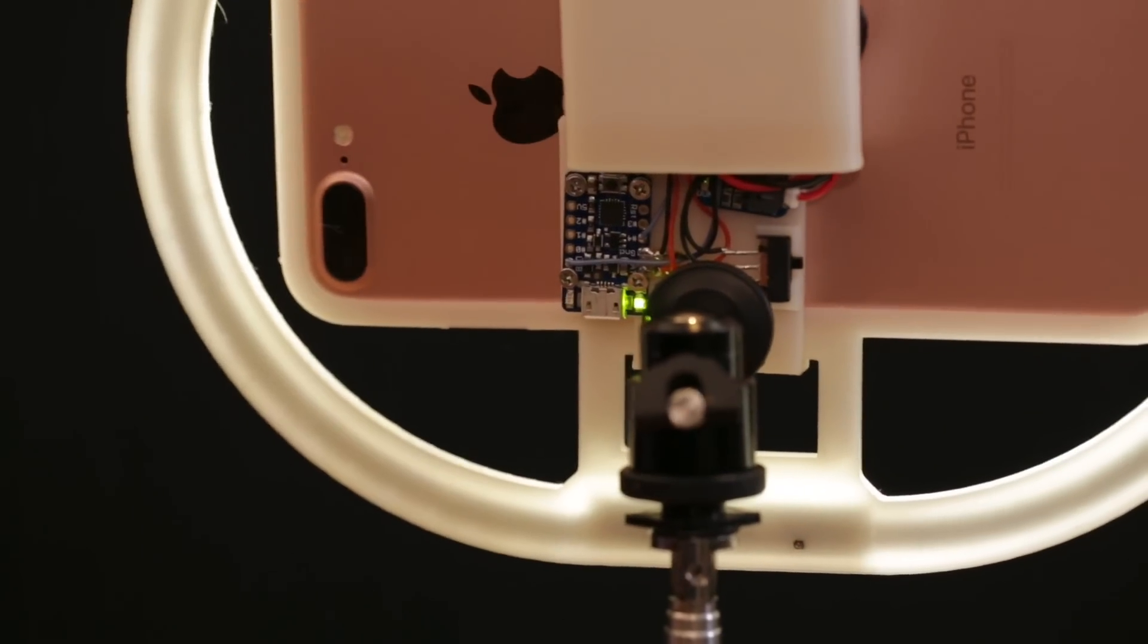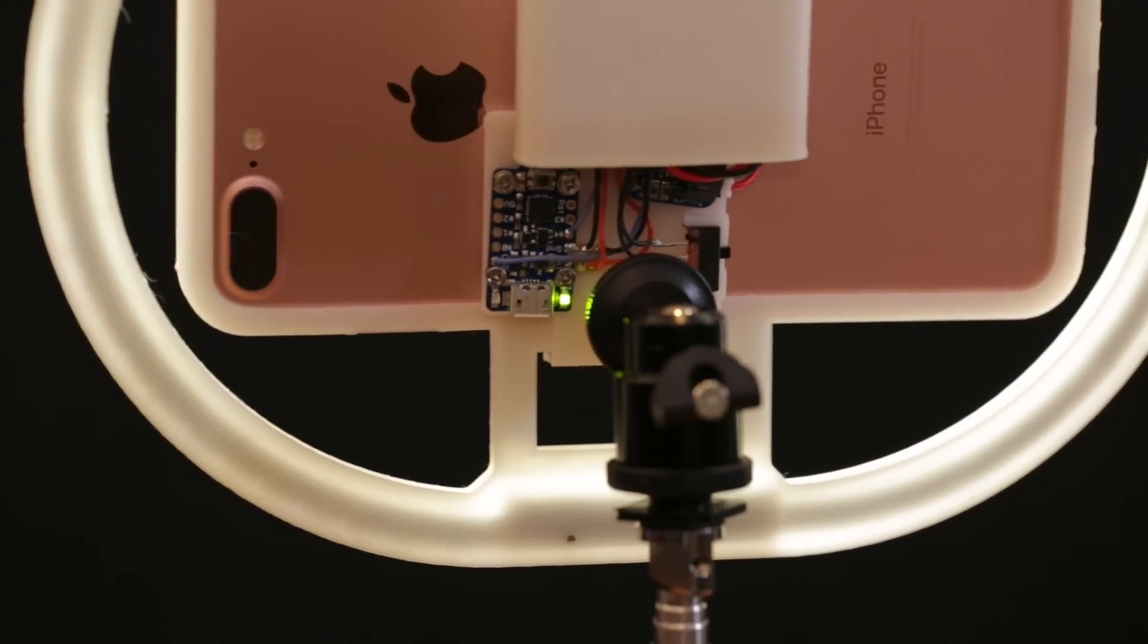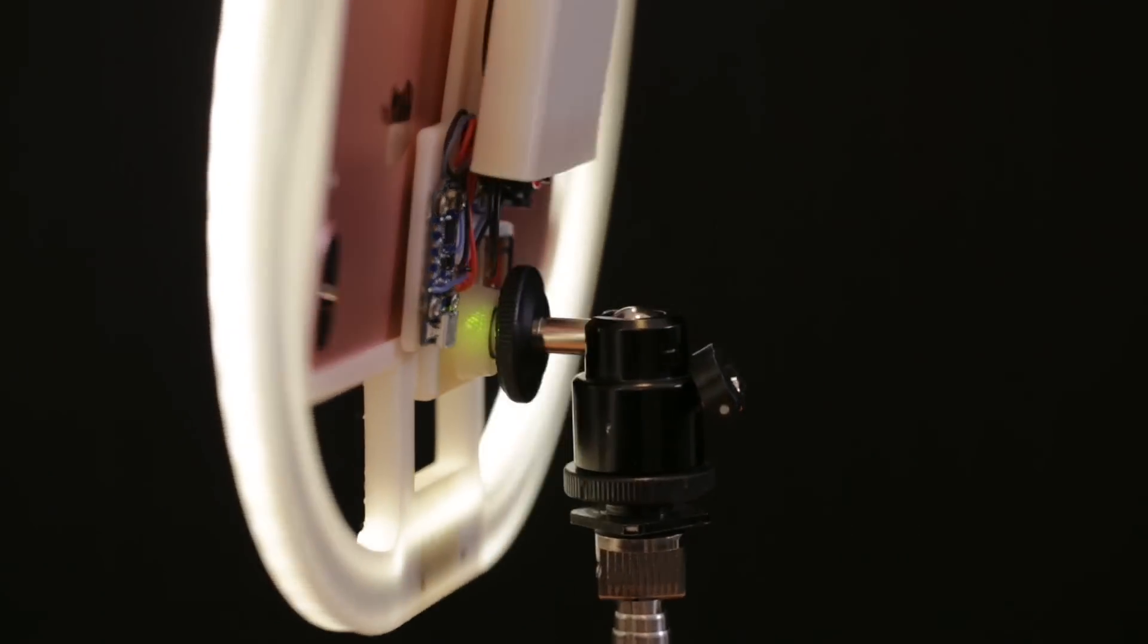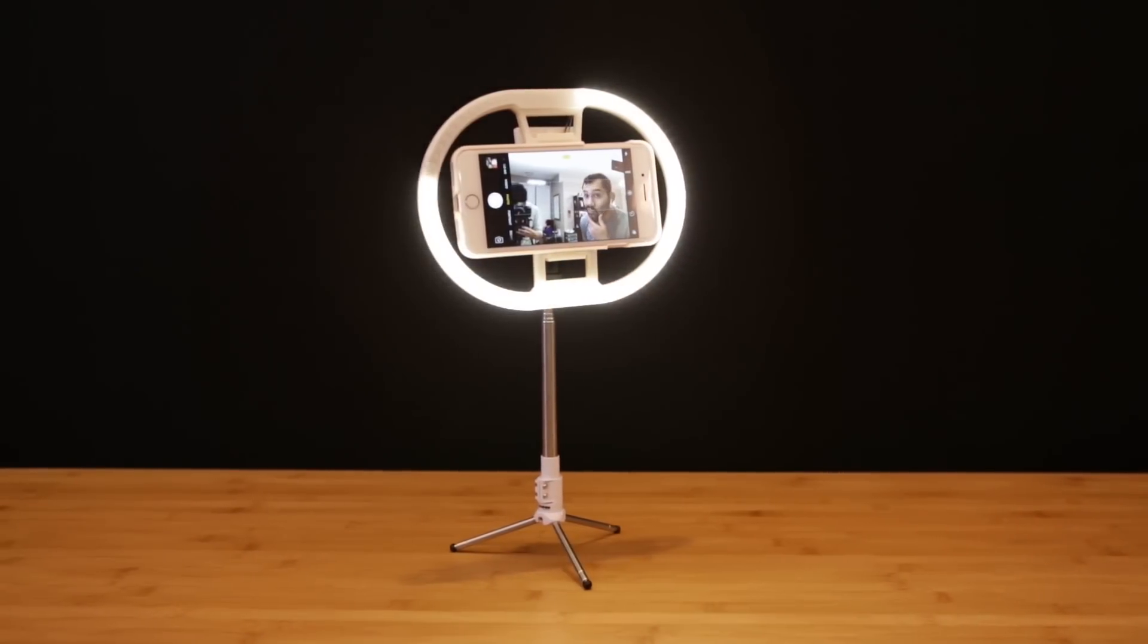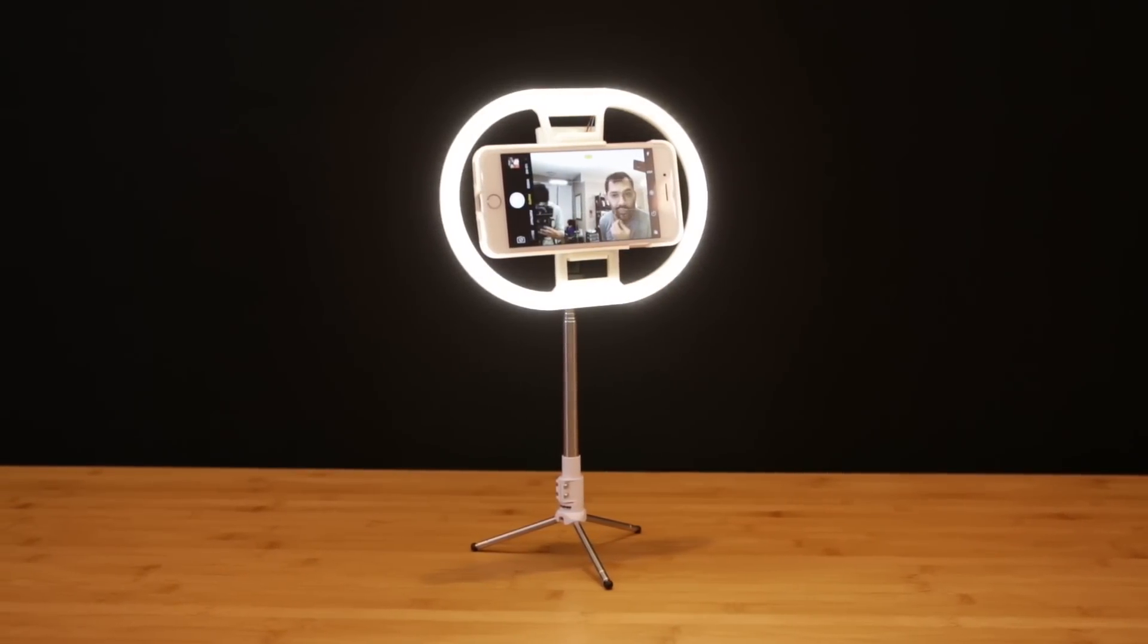It uses an Adafruit trinket and NeoPixel LEDs. It's portable and battery powered, or you can just plug it into the wall. Your phone snaps onto the 3D printed bumper, making a great lighting solution for your front facing camera.